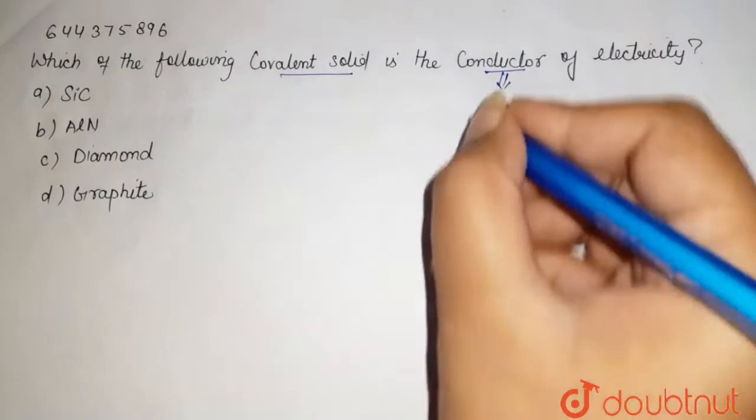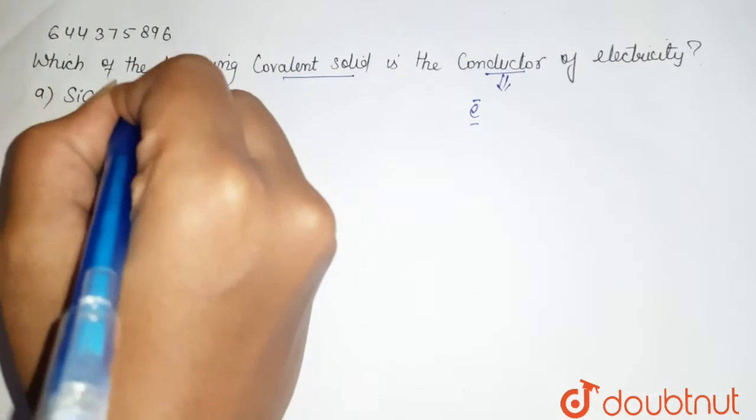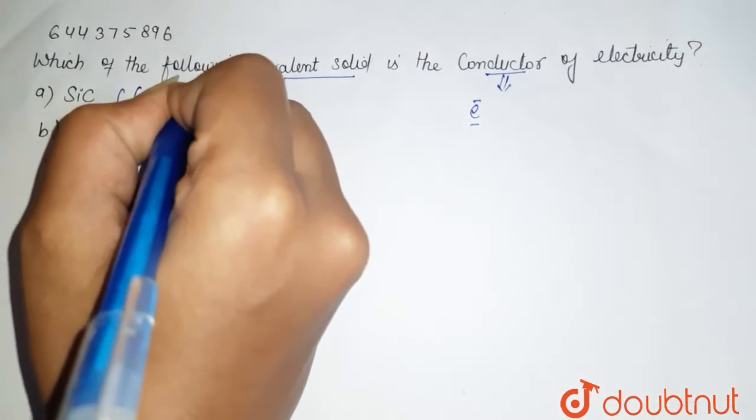For conduction we need an electron through which the electricity conducts. First we are having SiC also known as carborundum.